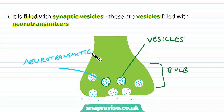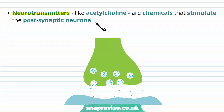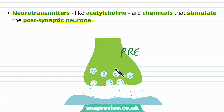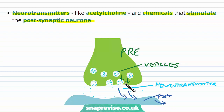Neurotransmitters are particular chemicals that stimulate the post-synaptic neuron. One type is called acetylcholine. The pre-synaptic neuron has these vesicles, and across the synapse the vesicles release the neurotransmitter into the cleft. The neurotransmitters diffuse across the synaptic cleft, act on the post-synaptic neuron, and stimulate it so that it can carry its own information onwards — acting as a bridge between the two neurons.